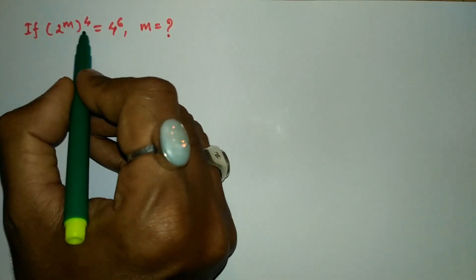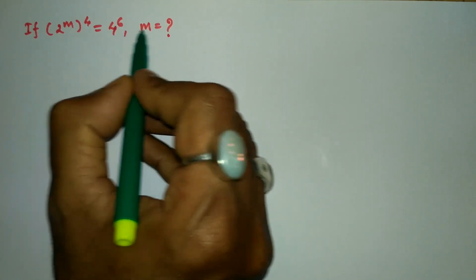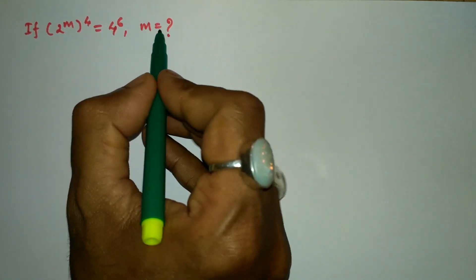If 2 to the power m, whole to the power 4, is equal to 4 to the power 6, then we need to find the value of m.